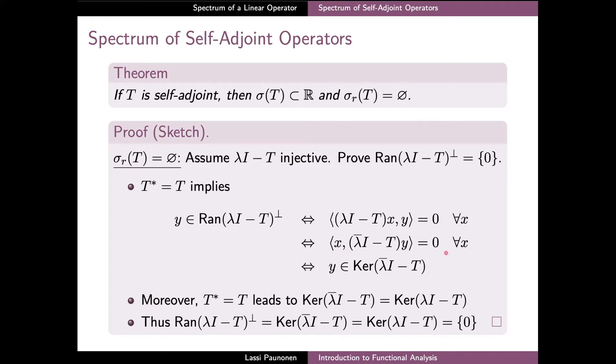Since this inner product is zero for all vectors X, the vector in this second component must necessarily be zero. Because of this, Y belongs to the kernel of conjugate λI − T. Since what we have here is a set of equivalences, we have that the complement of the range of λI − T in fact coincides with the kernel shown here.